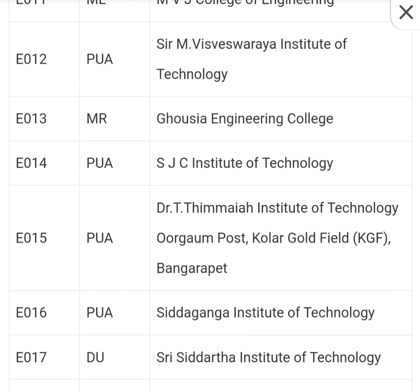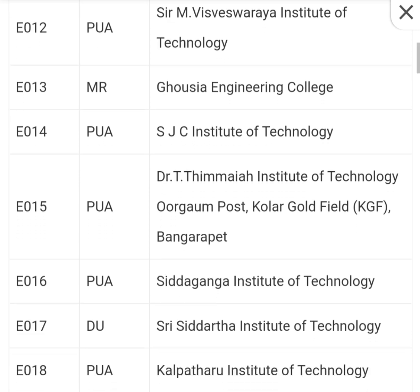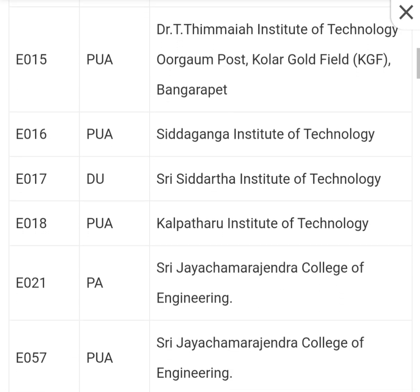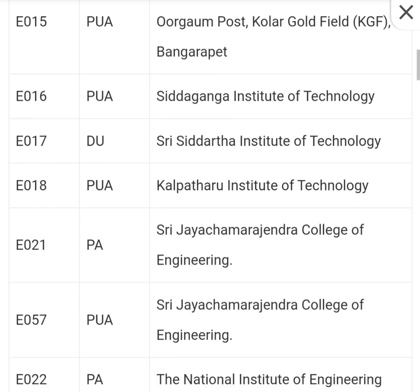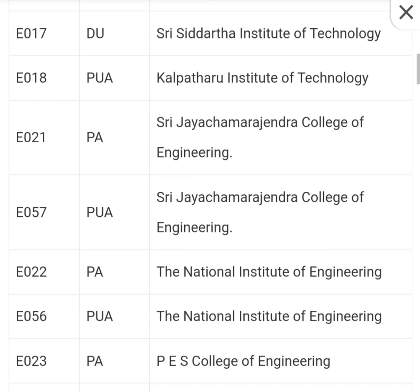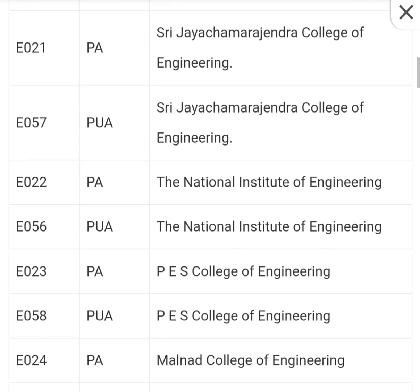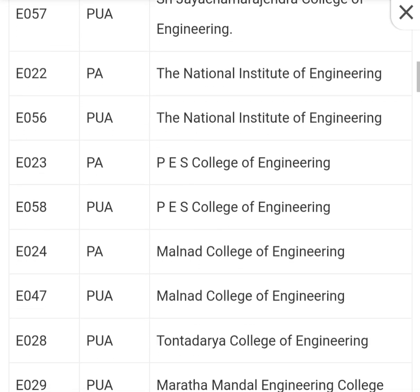MR means minority religious college, like Gaussia Engineering College, which is a Muslim minority college. DU means deemed university. PUA is private unaided. PA is private aided — so SJC is private but it's aided, that's why you see PA. Those are the codes, and till the end you will find all the colleges with the codes which you can use for option entry. You can check till the last sheet.